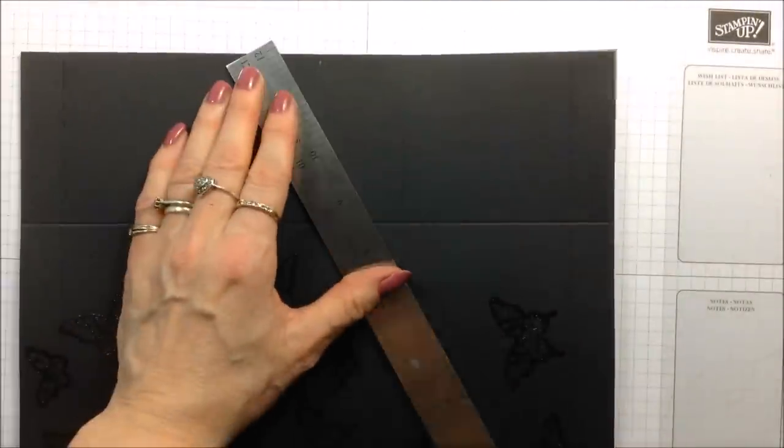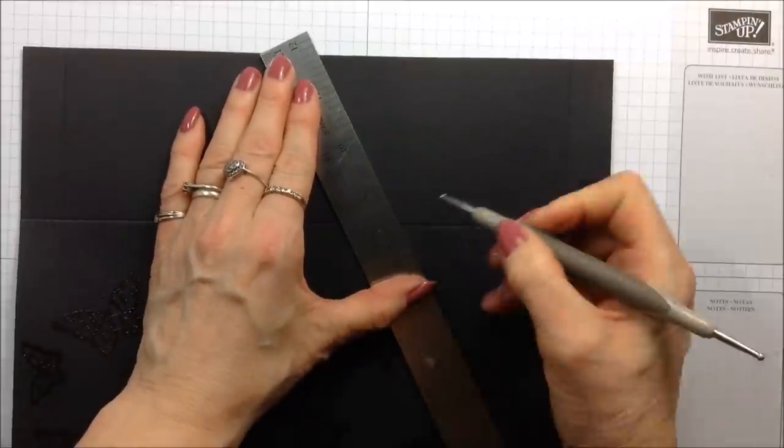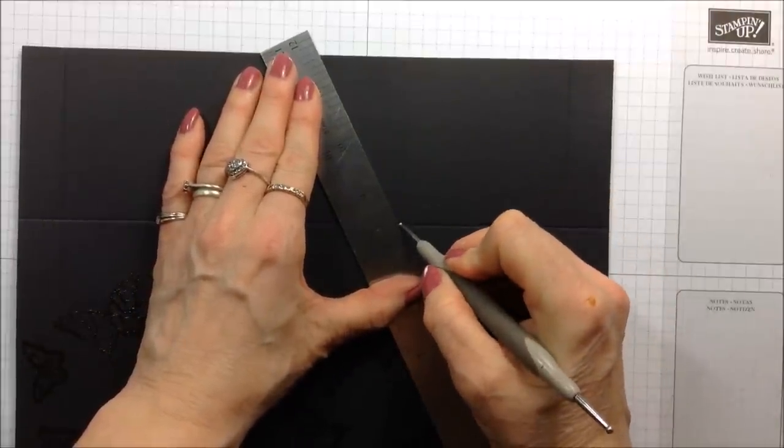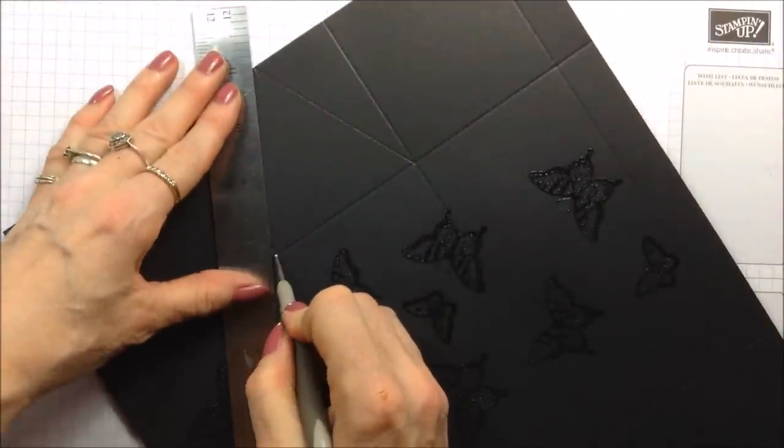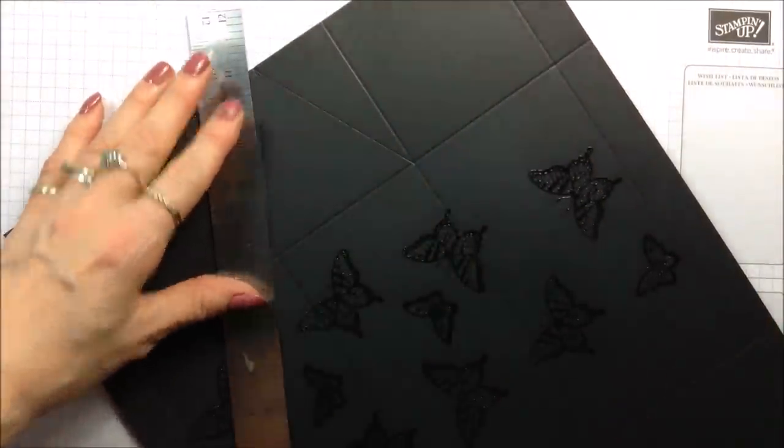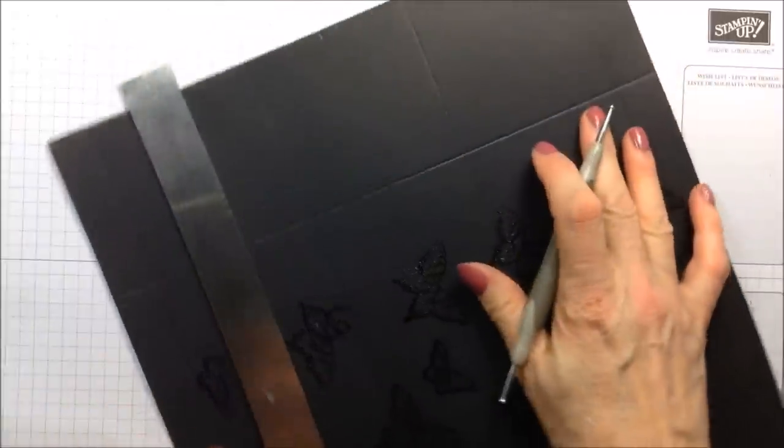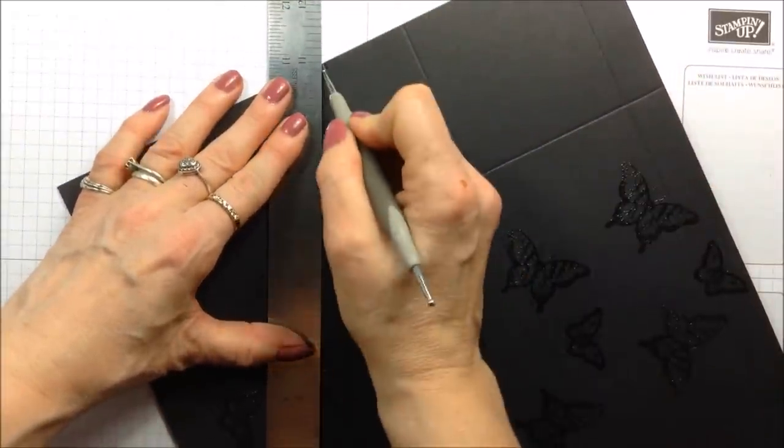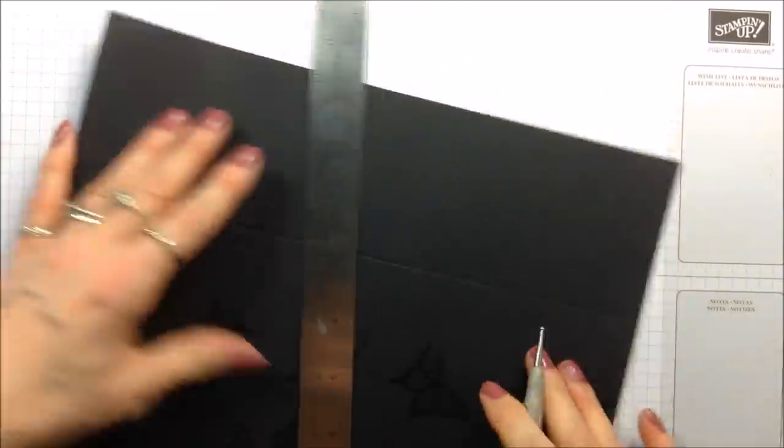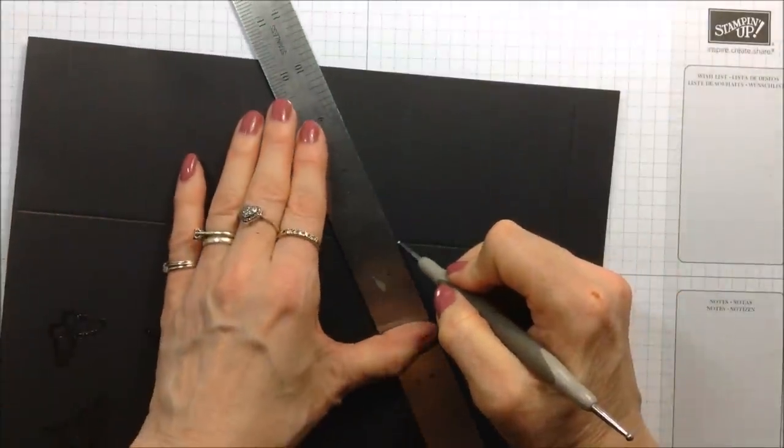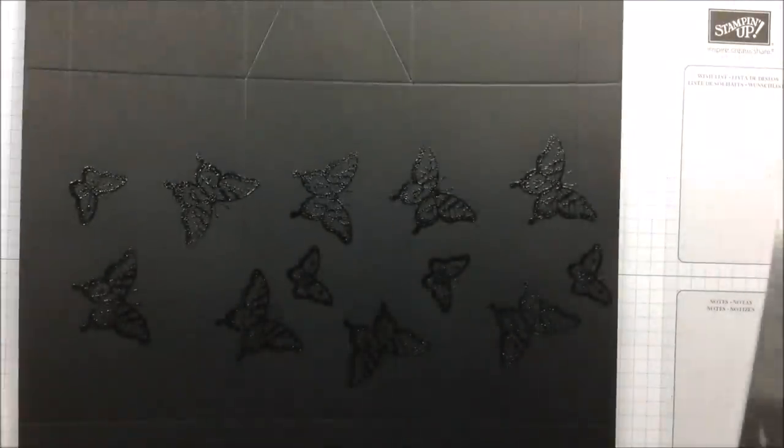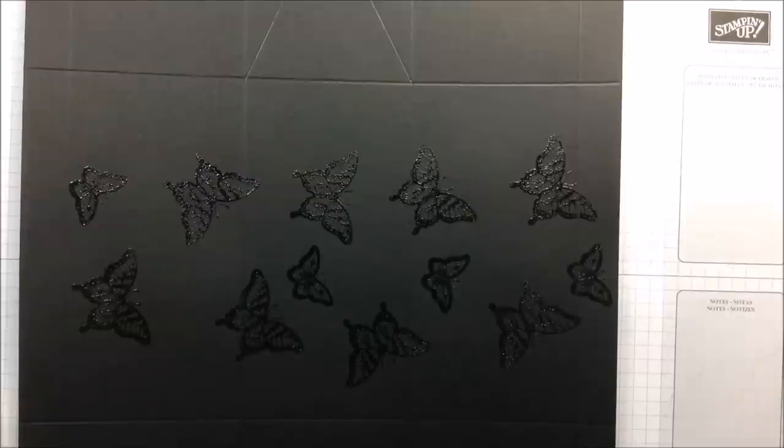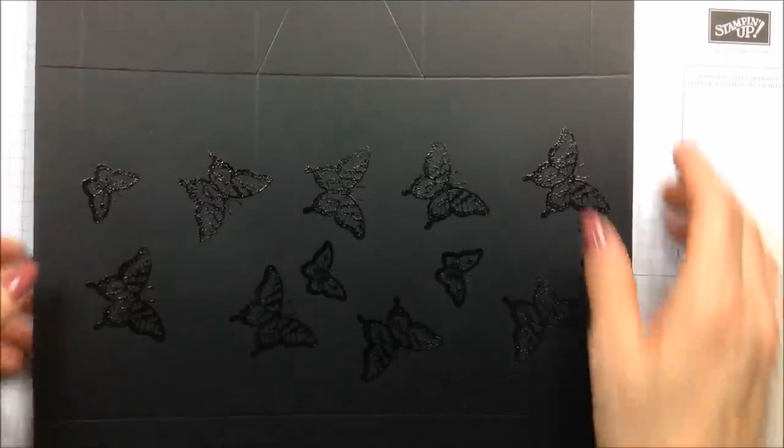I'm grabbing a steel wool, just going to score a line from this corner here up to that notch and back down. So that's all of the scoring done, and now all we need to do is go around and burnish all of the score lines.